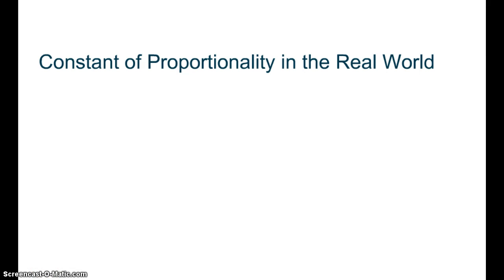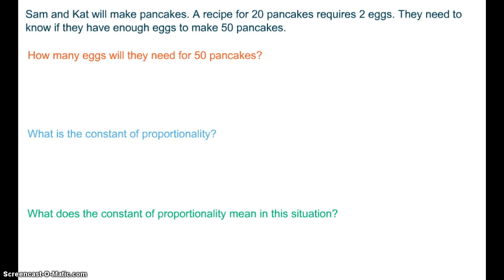Constant of proportionality in the real world. I have a situation for you and I want you to copy it down. Sam and Cat will make pancakes. A recipe for 20 pancakes requires 2 eggs. They need to know if they have enough eggs to make 50 pancakes.